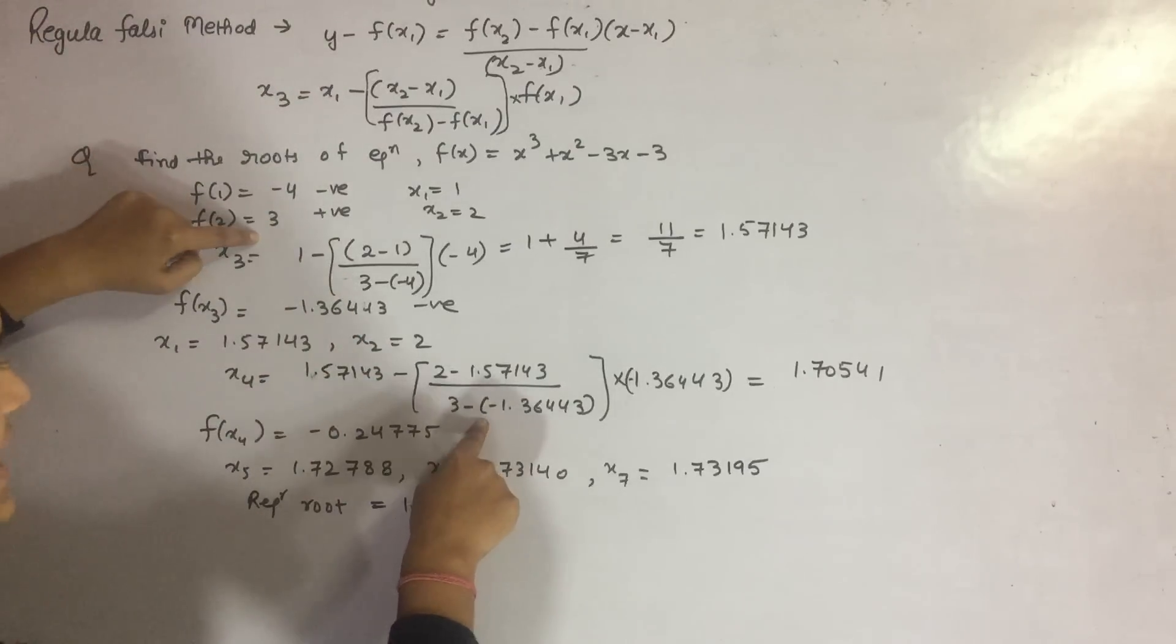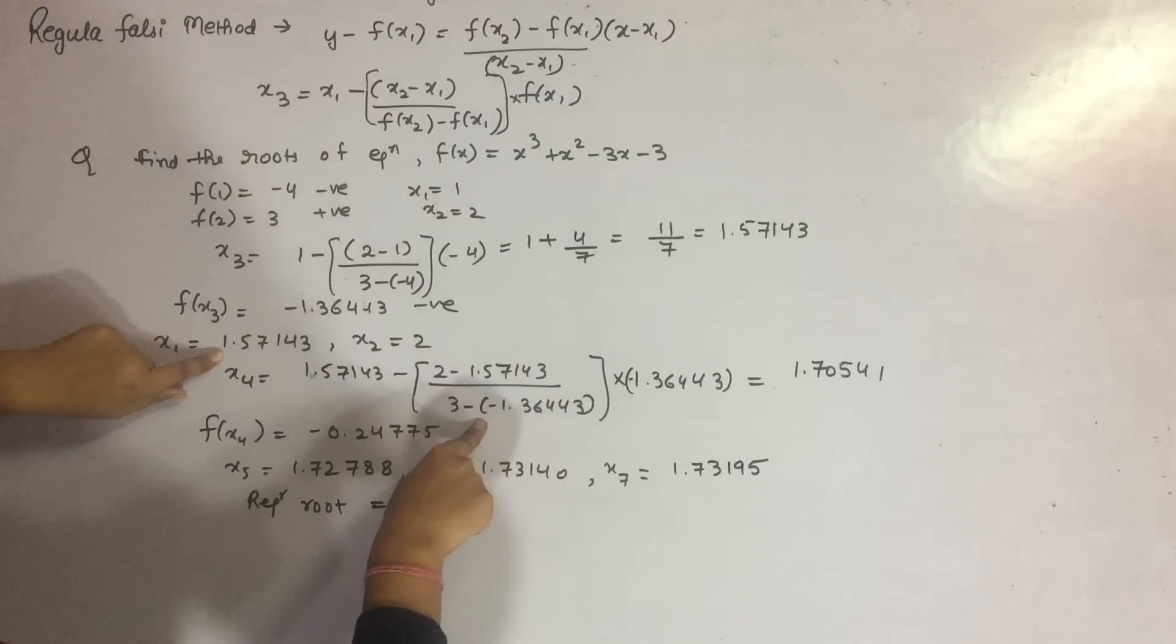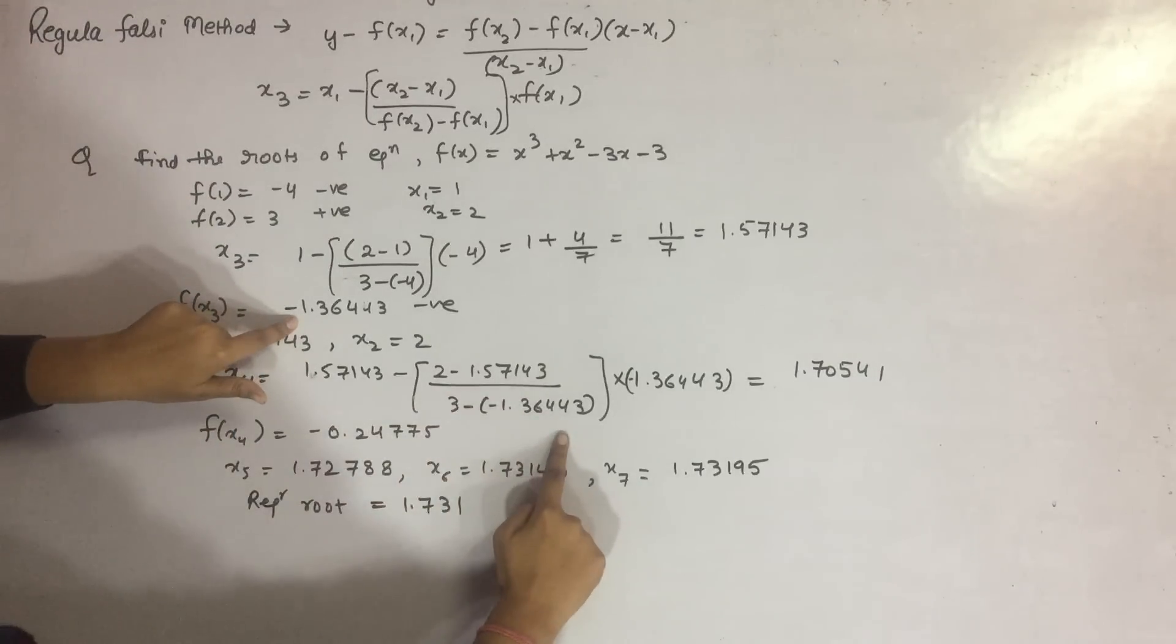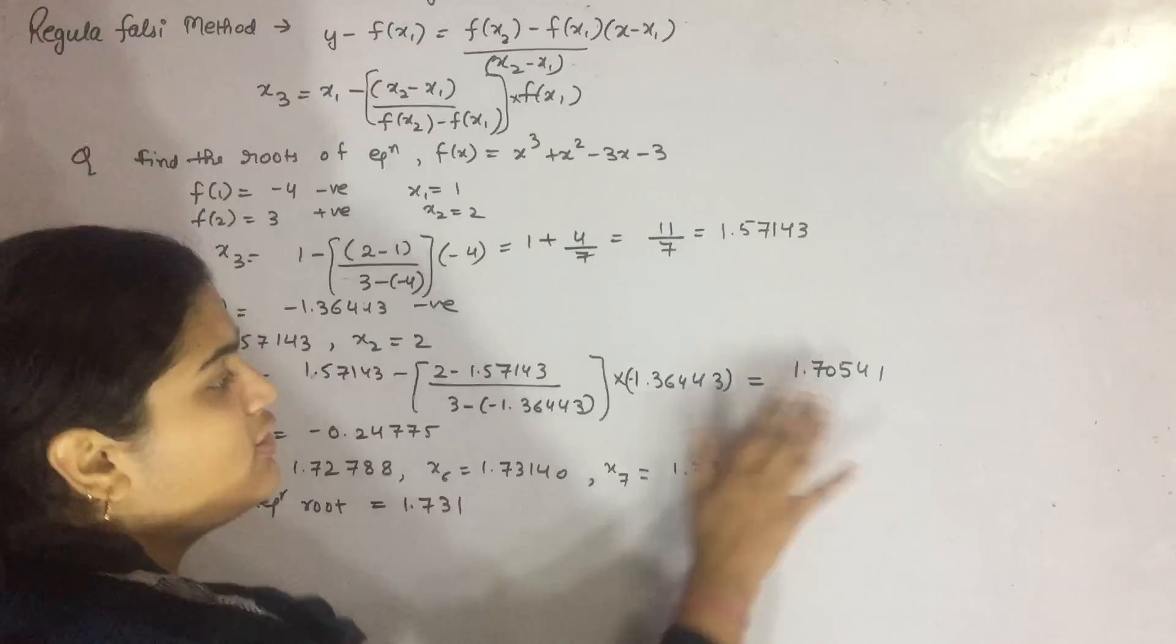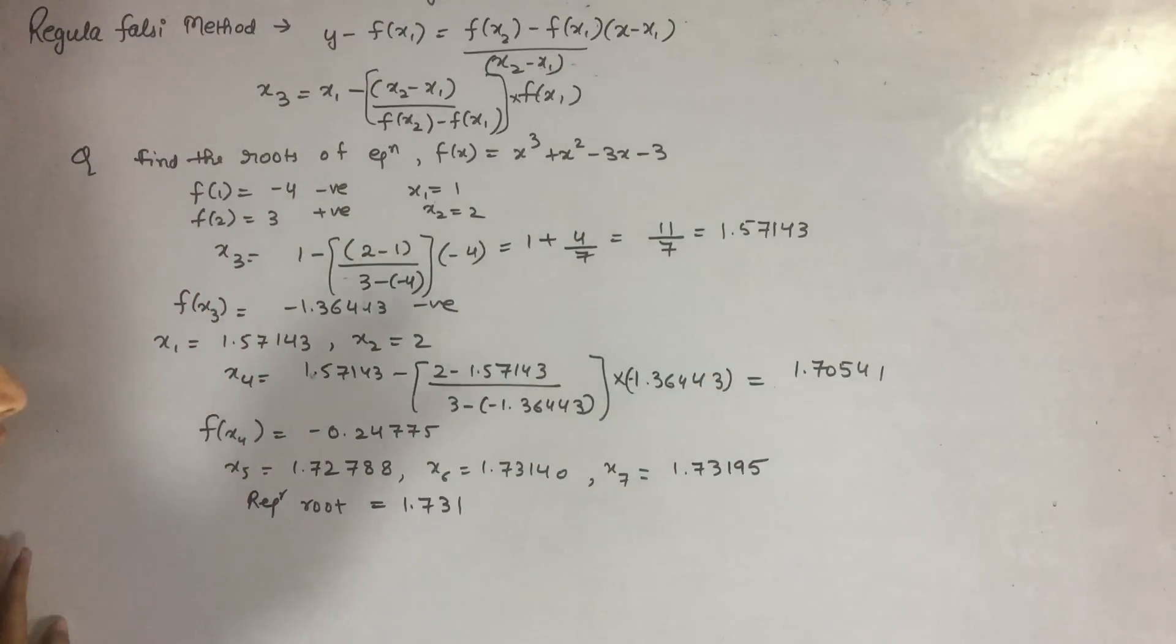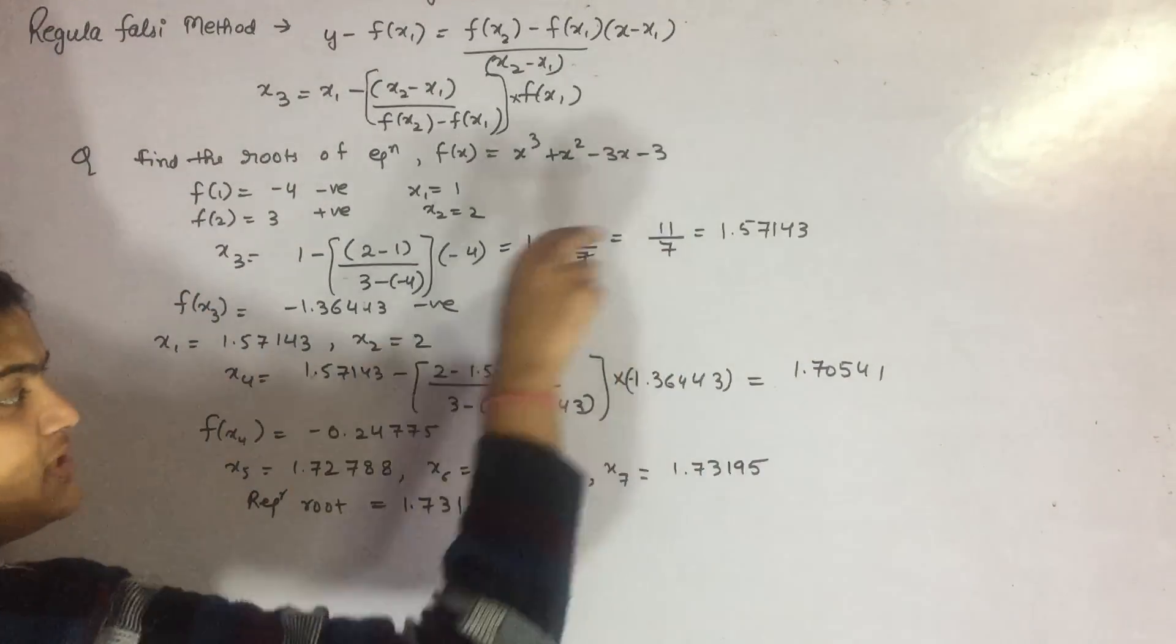...which is 3, minus f(x1), which is f(1.57143), which is minus 1.36443. When you solve it, you will find that your value is 1.70541.